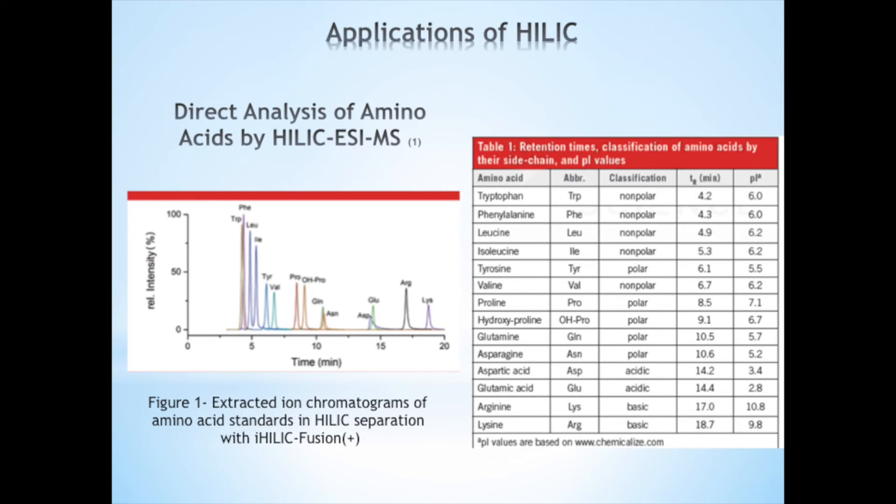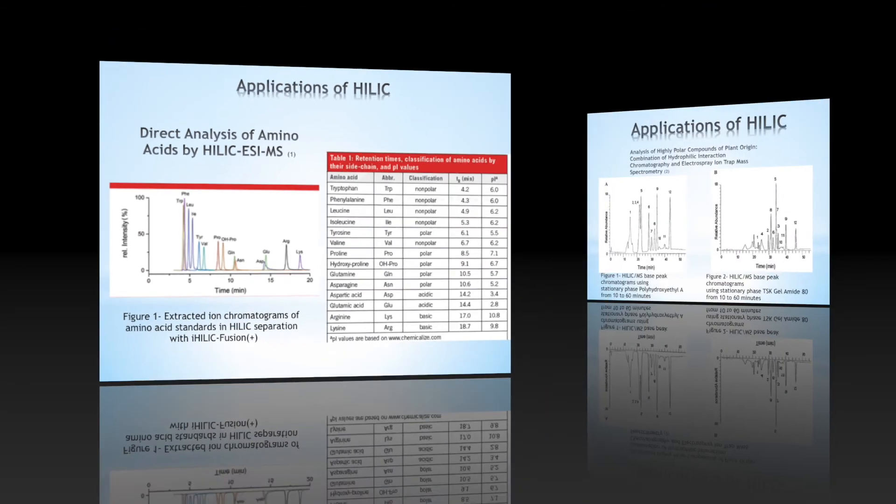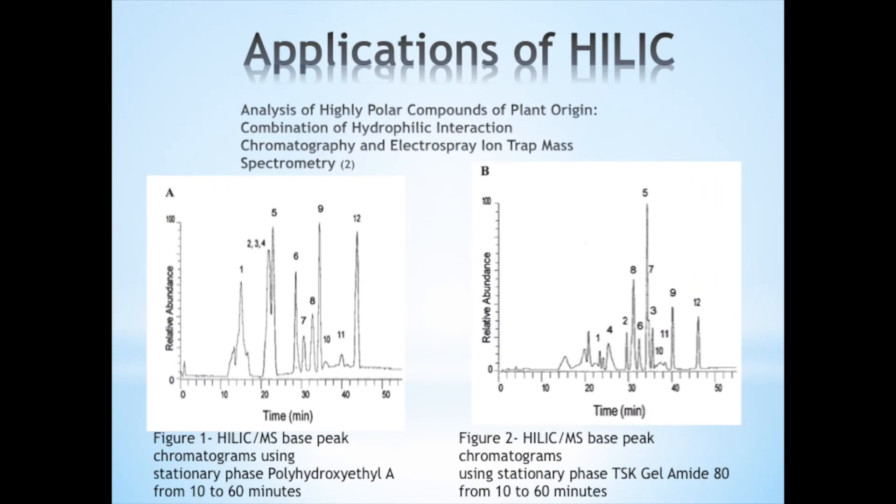HILIC columns are used for many applications, for example, to analyze bioanalytical compounds. In this scientific study, 14 amino acids were separated based on their side-chain polarities, as you can see in Figure 1. A HILIC Fusion Plus column was used packed with charged modulated hydroxyethyl amine silica and coupled with an ESI-MS detector. The retention times, classification of amino acids, and pI values are summarized in Table 1.